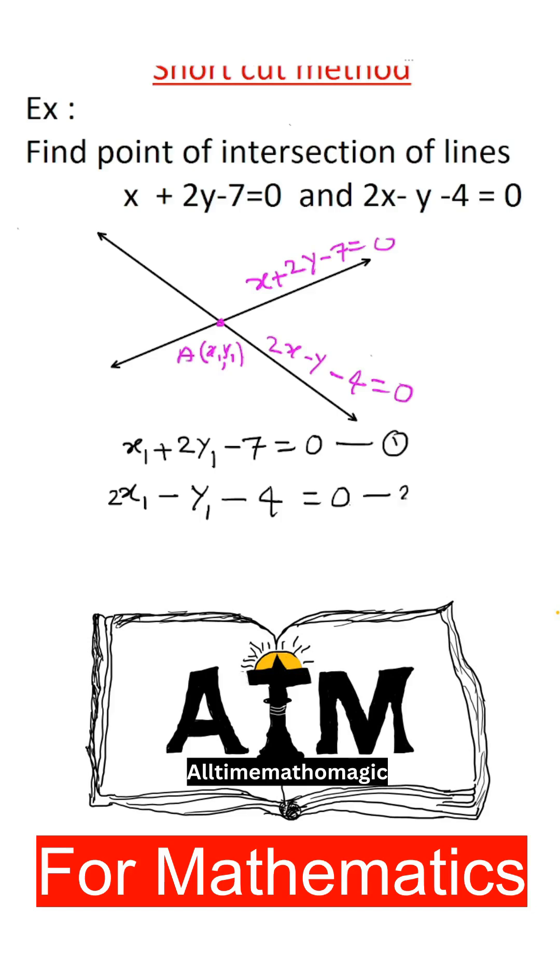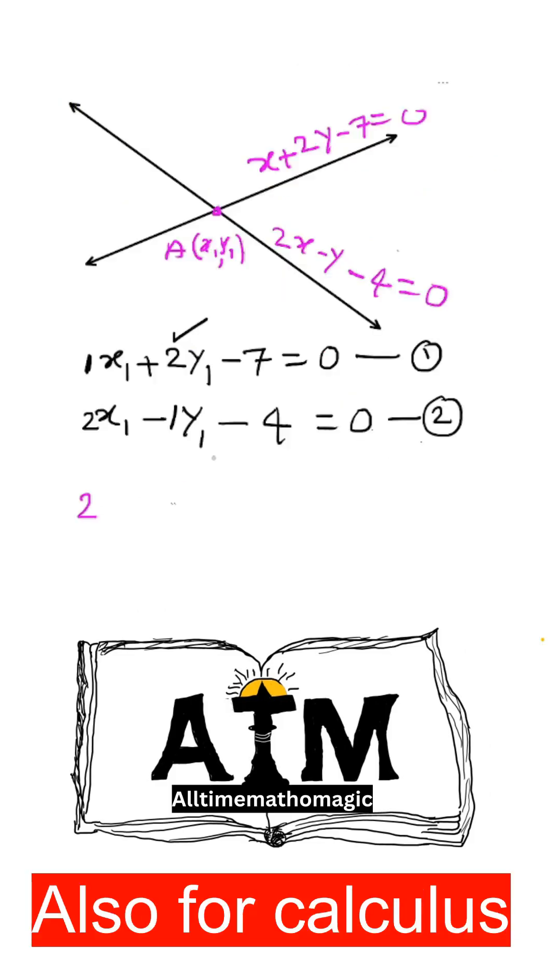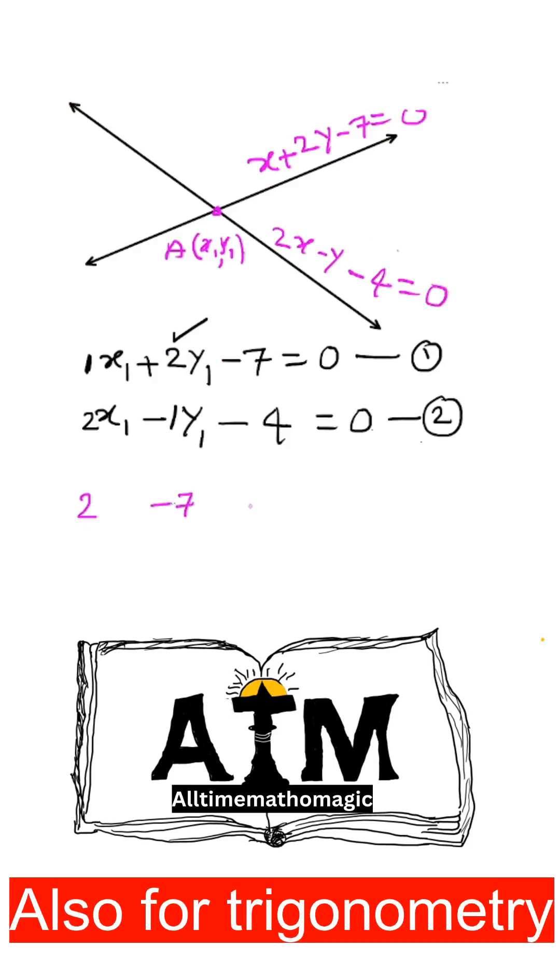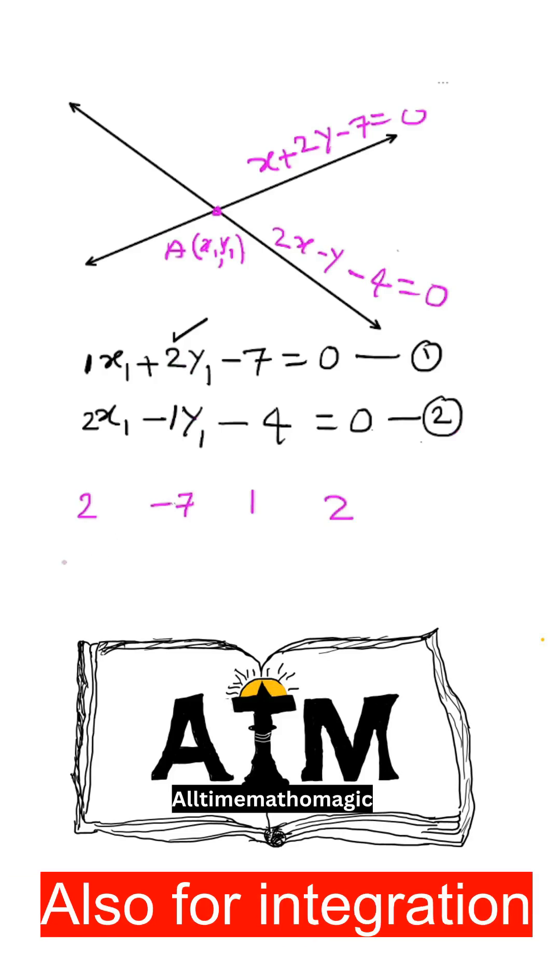Write down the 2, after that constant -7, after that X term is 1, come back to the Y term. Similarly for the second equation, the Y coefficient is -1. Always start with the Y term.